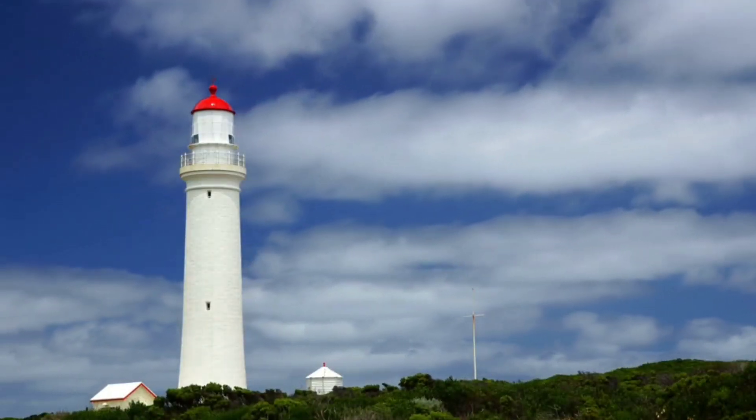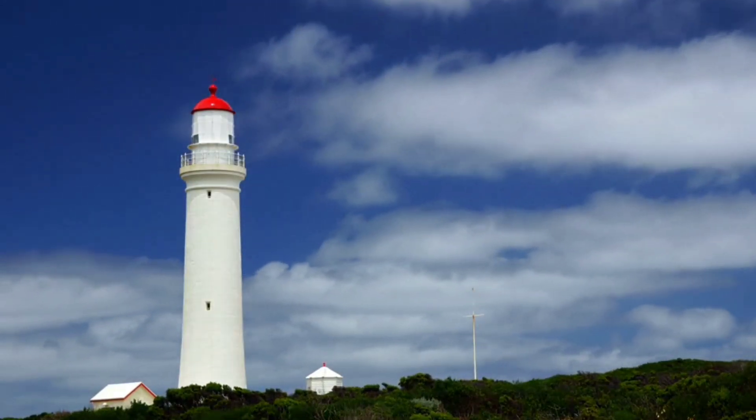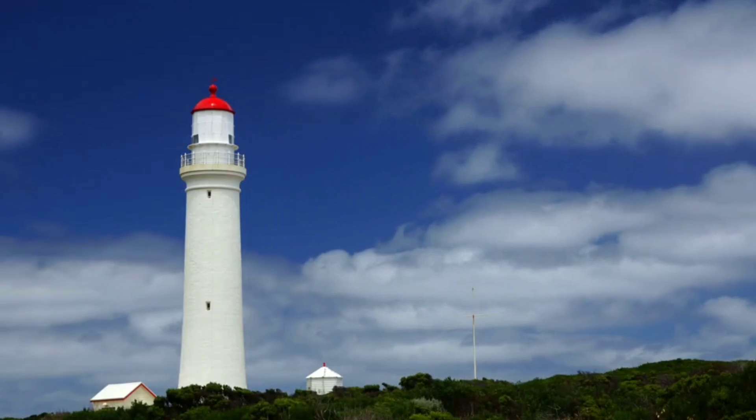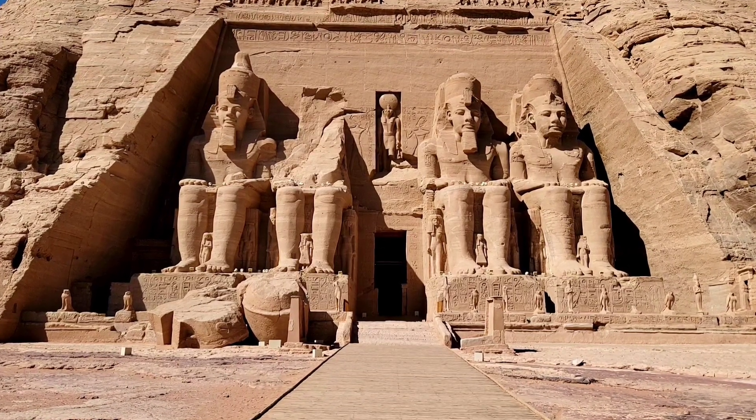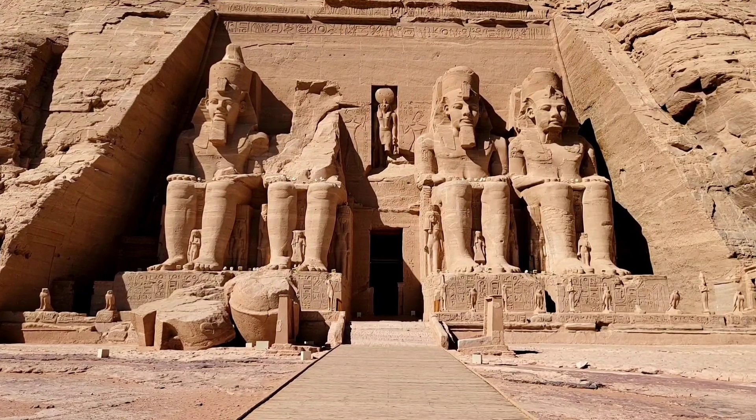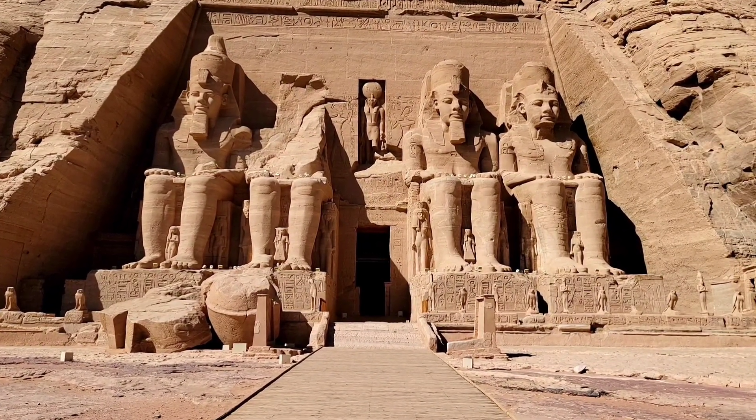And this isn't the first time buildings have been moved. In 1999, the Cape Hatteras Lighthouse in the U.S. was relocated. In Egypt, the Abu Simbel temples were disassembled and reassembled to protect them from rising waters.